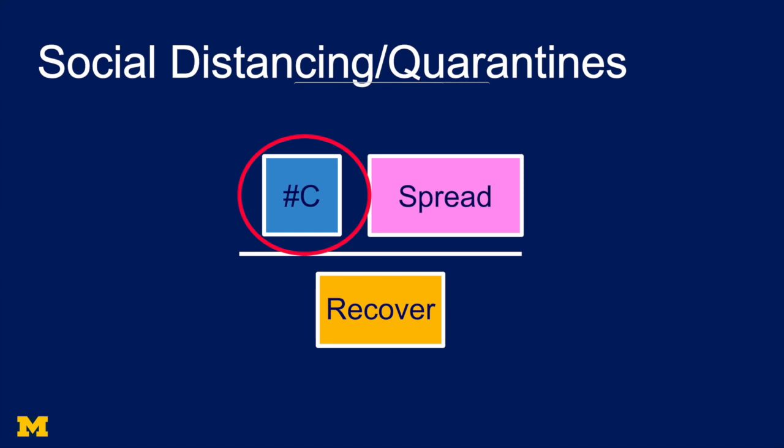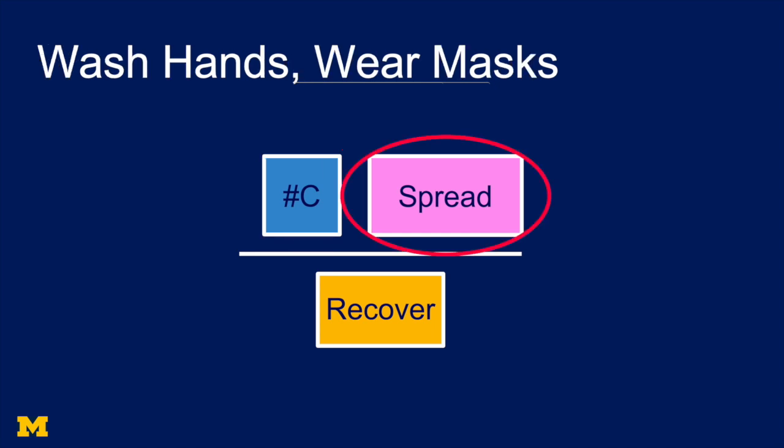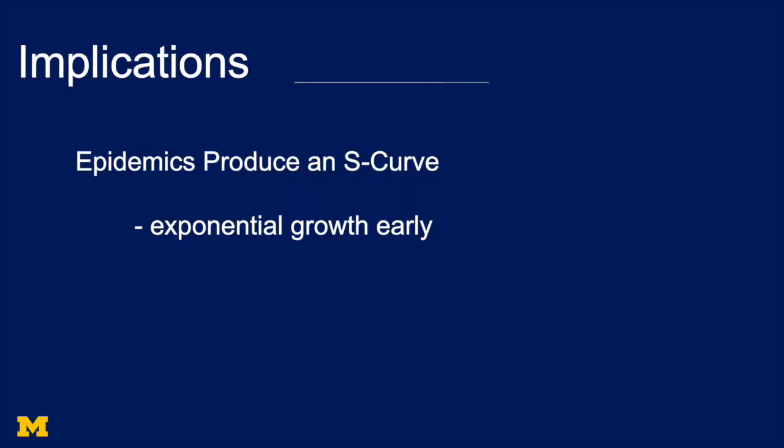But what can people do? Well, we can reduce the number of contacts. We can, through social distancing and quarantine, not be in contact with as many people. We can also reduce the probability of transmission. We can wash our hands. We can wear masks. That, together with having fewer contacts, makes the numerator smaller. So, what are the implications? The implications of this model are as follows.